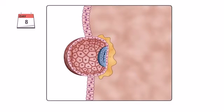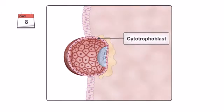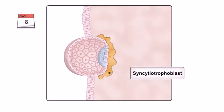As the trophoblast makes contact with the endometrium, it differentiates into two layers: an inner cytotrophoblast and an outer syncytiotrophoblast.